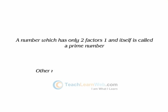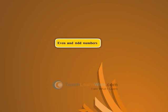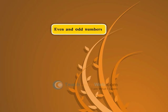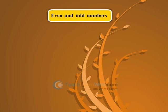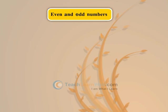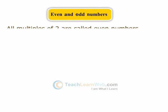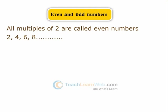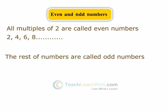Other numbers are called composite numbers. Even and Odd Numbers: All multiples of two are called even numbers. The rest of the numbers are called odd numbers.